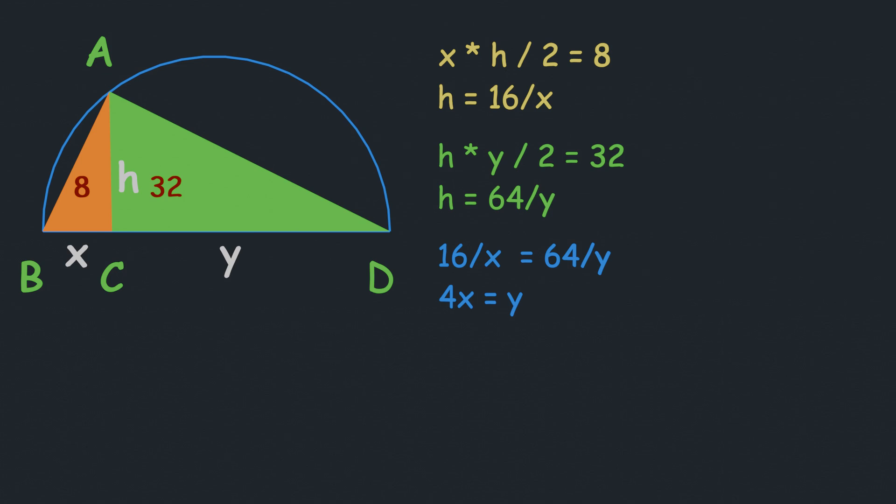If angle CBA is P, then angle BAC will be 90 - P. Because angle DAB is a right angle, angle CAD will be P and angle ADC will be 90 - P. So both triangles are symmetric because their angles are equal.